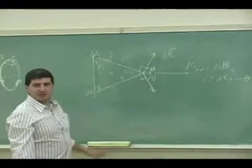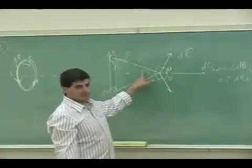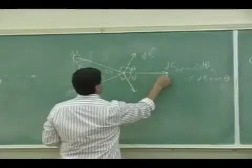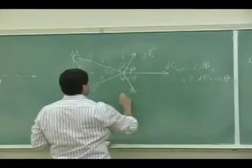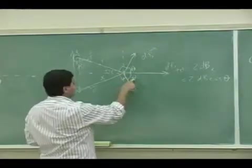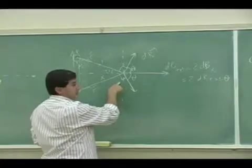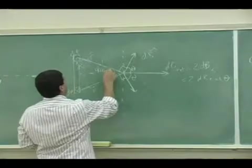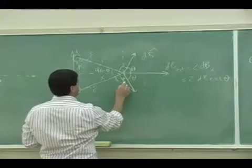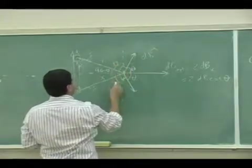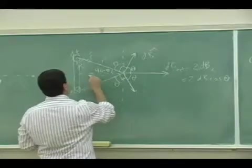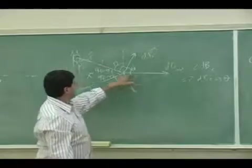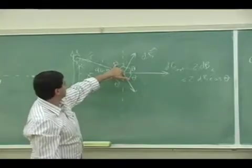I sloppily drew it, and therefore it made me think that this and this are the same. Now let's analyze: if this is theta, I've got to take cosine of theta to get the X component. This angle — you can draw the vertical like this — this is theta, this one is 90 minus theta. So this is really not theta, it's 90 minus theta.